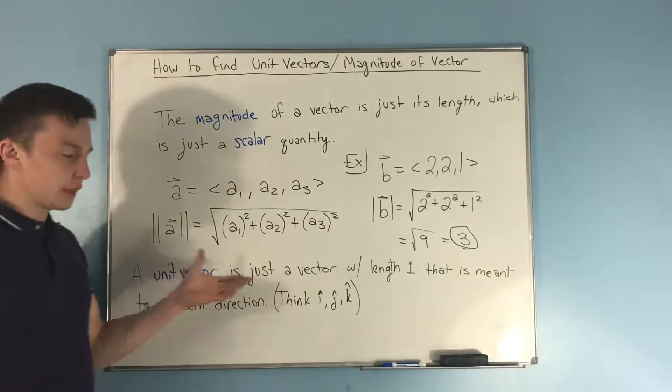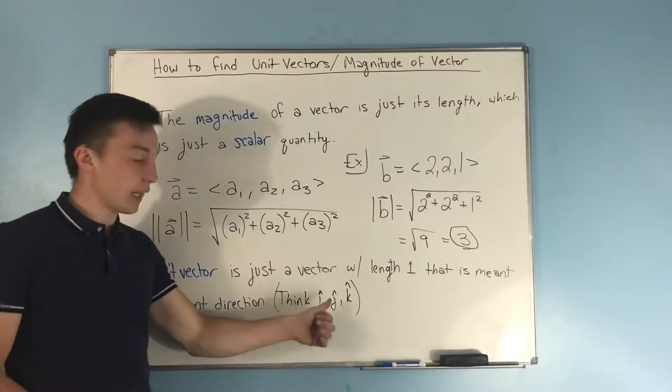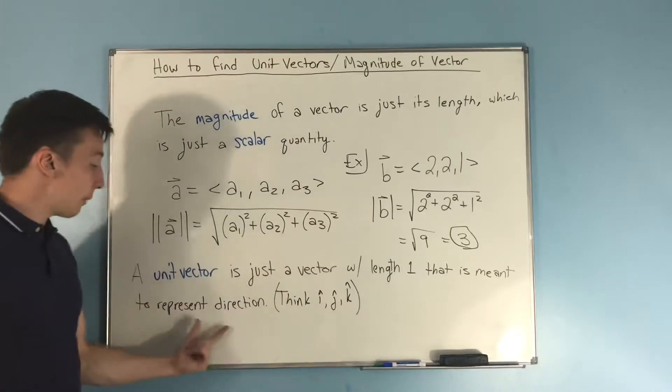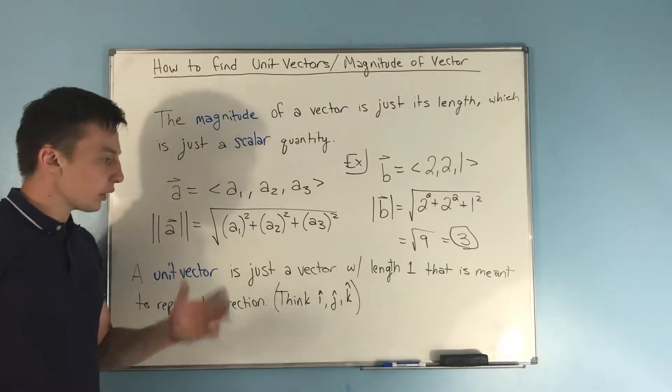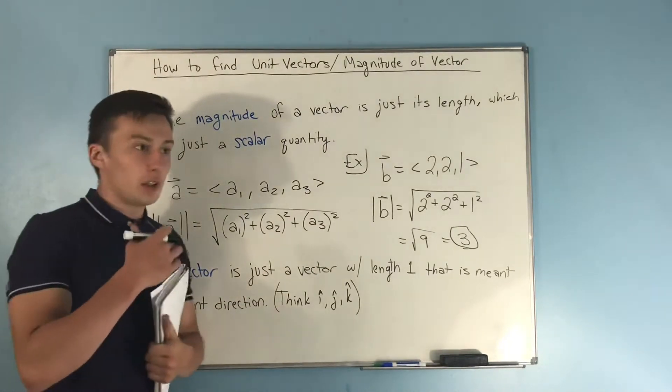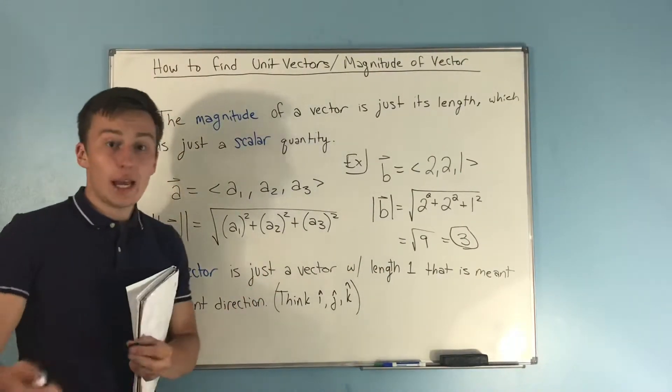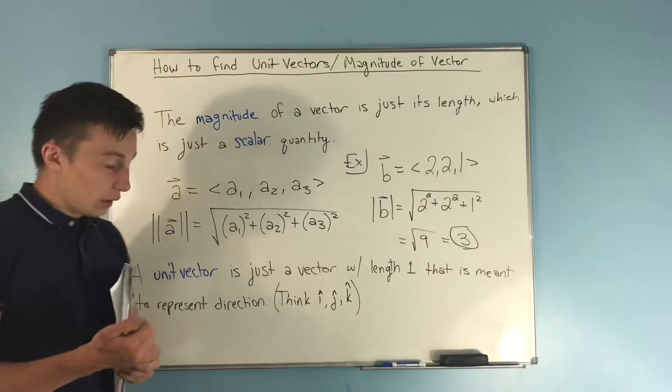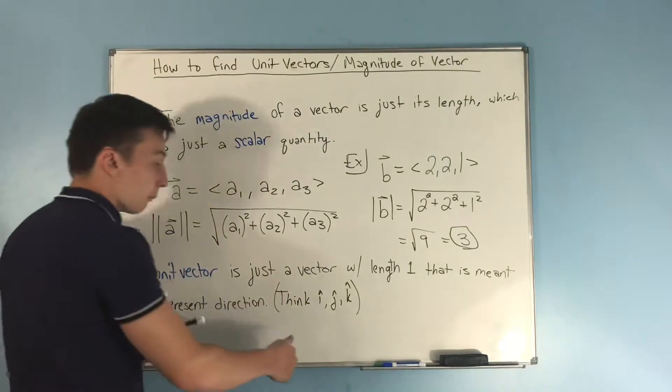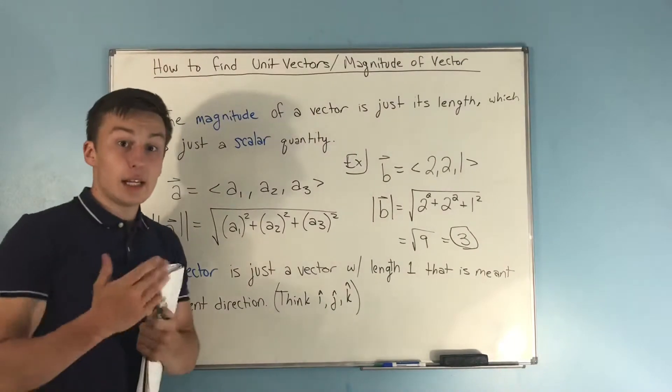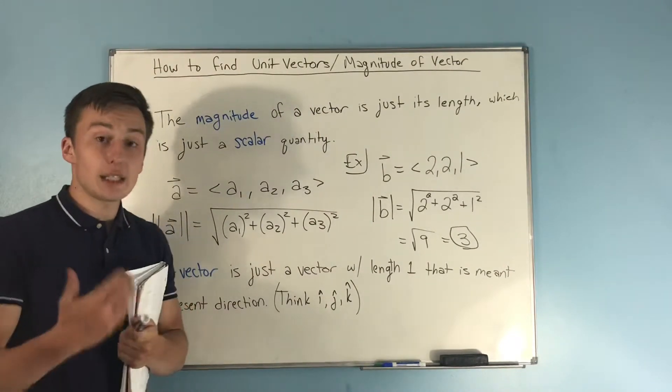Now what are some examples of this? Well, i hat, j hat, and k hat are all unit vectors. They're vectors with length 1 and they're only meant to represent direction. So when you're saying something like 2 i hat plus 3 j hat plus k hat or something like that, you're literally just multiplying by this unit vector to get a certain distance in each of those directions. That's their use.